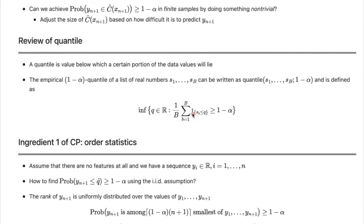The indicator function gives 1 when a condition is met. We count the number of times values in these B real numbers are less than or equal to a threshold Q. We want the normalized fraction to be at least 1 minus alpha. To avoid a trivial solution, we look at the infimum or minimum value for this threshold Q — the smallest possible Q such that at least a 1 minus alpha portion of data lies below Q.